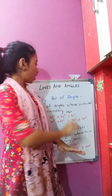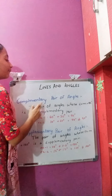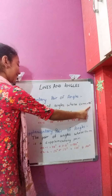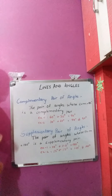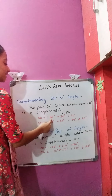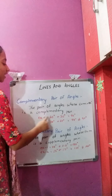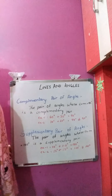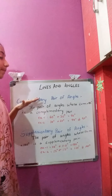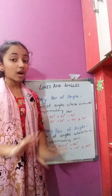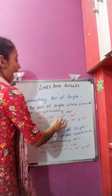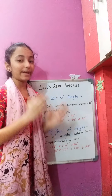Now let's discuss complementary and supplementary pairs. The pair of angles whose sum is equal to 90 degrees is a complementary pair. For example, 60 degrees plus 30 degrees equals 90 degrees, so this pair is a complementary pair. Remember, 90 degrees alone is not a complementary pair — 60 degrees and 30 degrees together make a complementary pair.